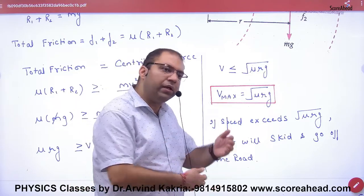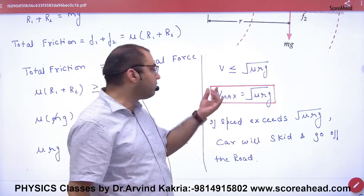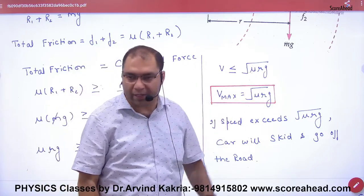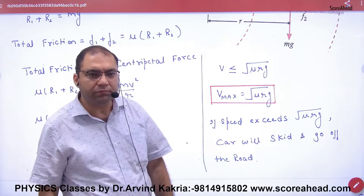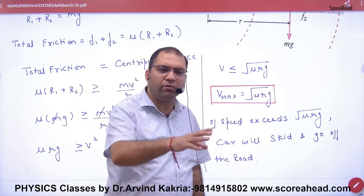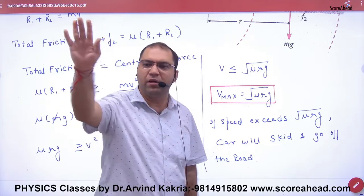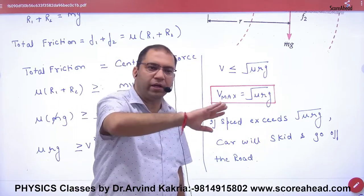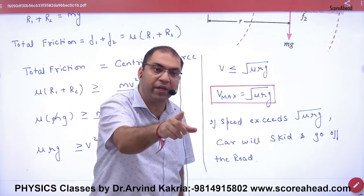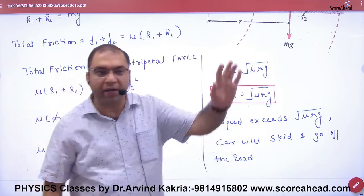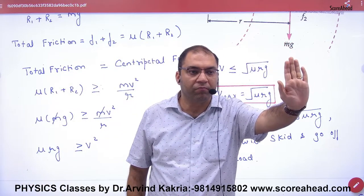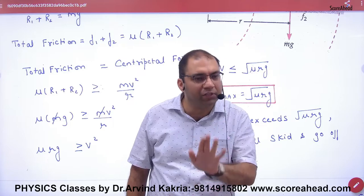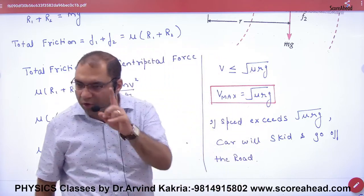So the maximum speed is v_max equals the square root of mu R g. If you look at a roundabout, the speed limit boards show 80 km/h, 90 km/h, 40 km/h, 45 km/h, 50 km/h, 60 km/h — these are calculated from the formula square root of mu R g. If the car exceeds this speed, it will slip. That is why the board shows the maximum speed limit.